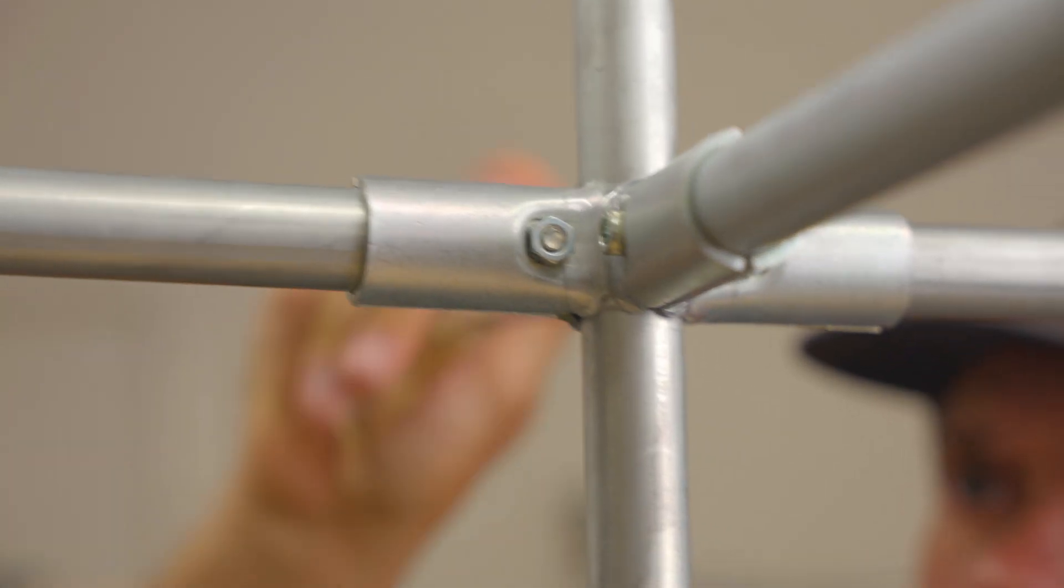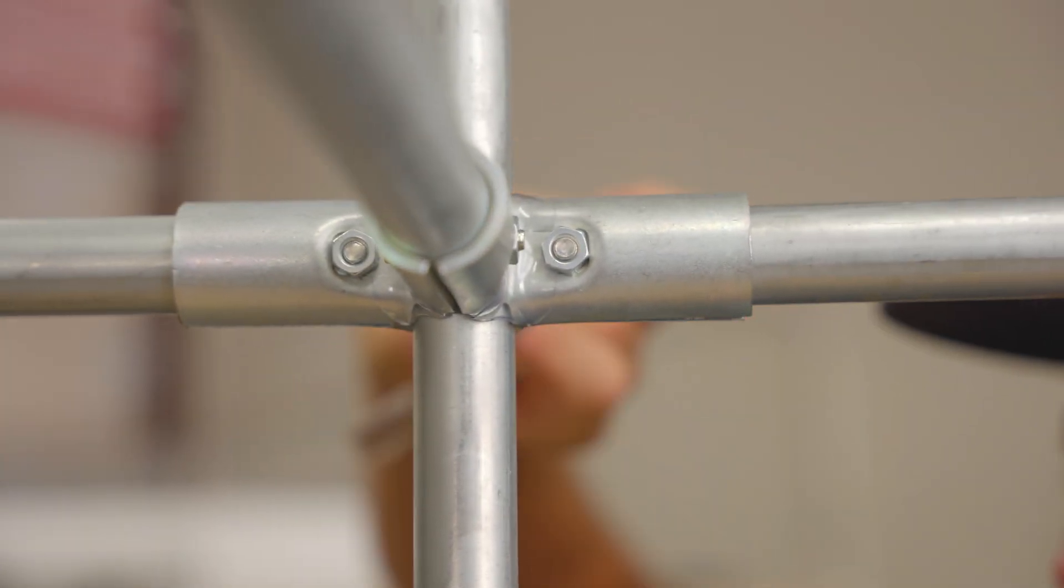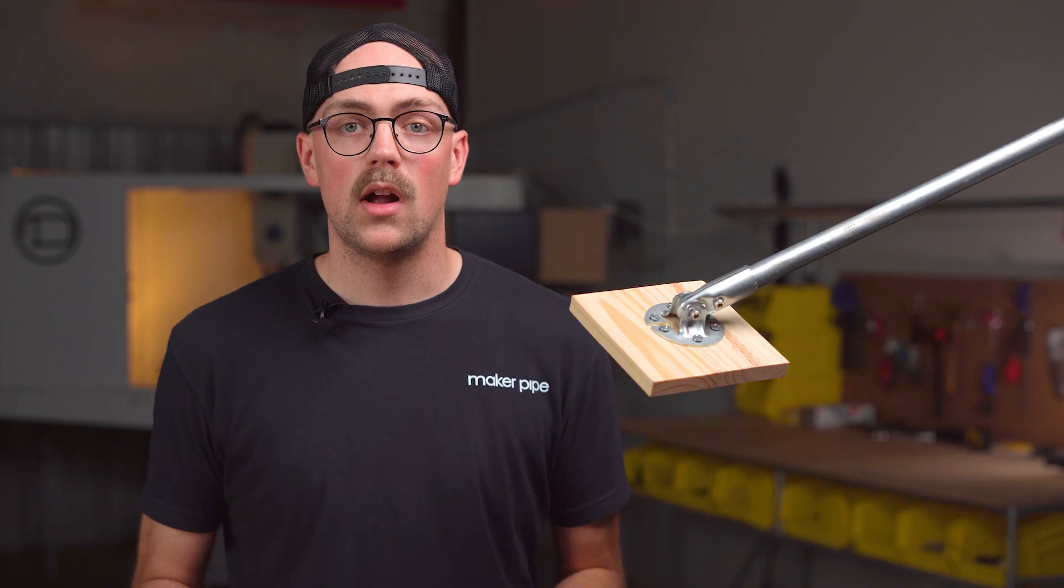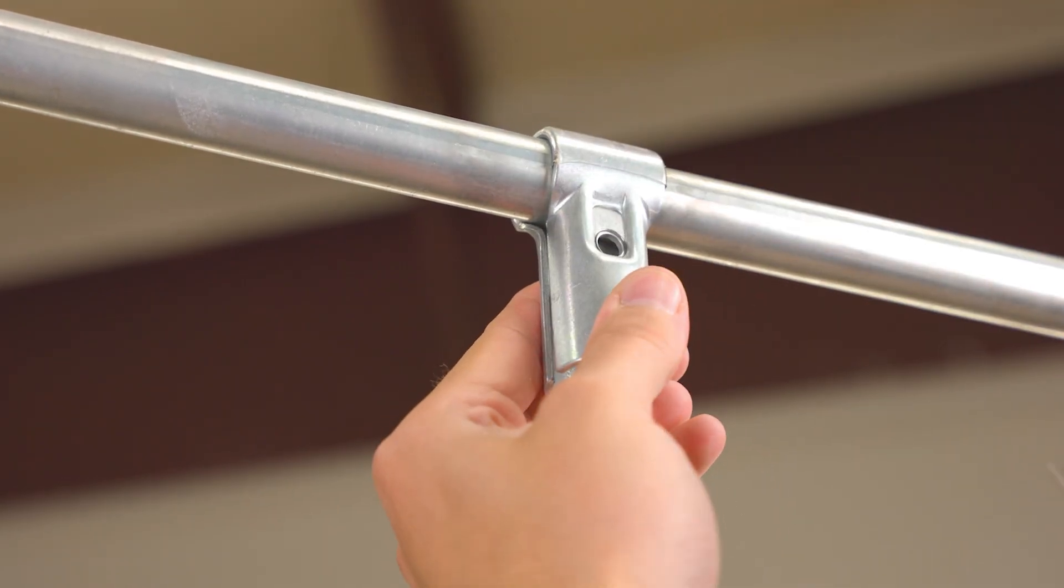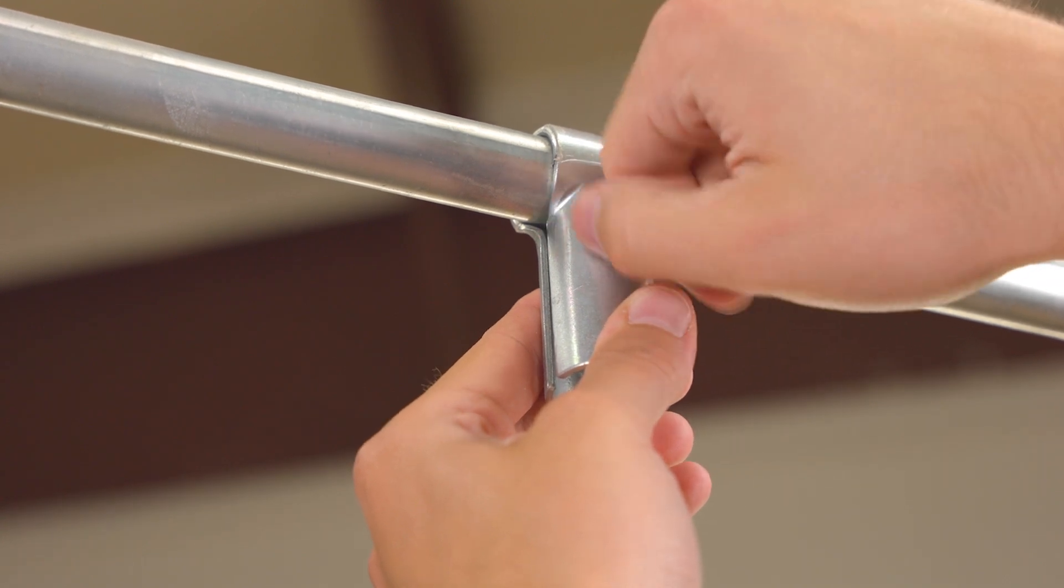Maker Pipe connectors exist so you can securely join pieces of EMT conduit together and create awesome projects that you can be proud of. We designed them to clamp around conduit and rely on friction. This means that you can build your project without needing to use electricity or specialty tools like a drill or a welder.